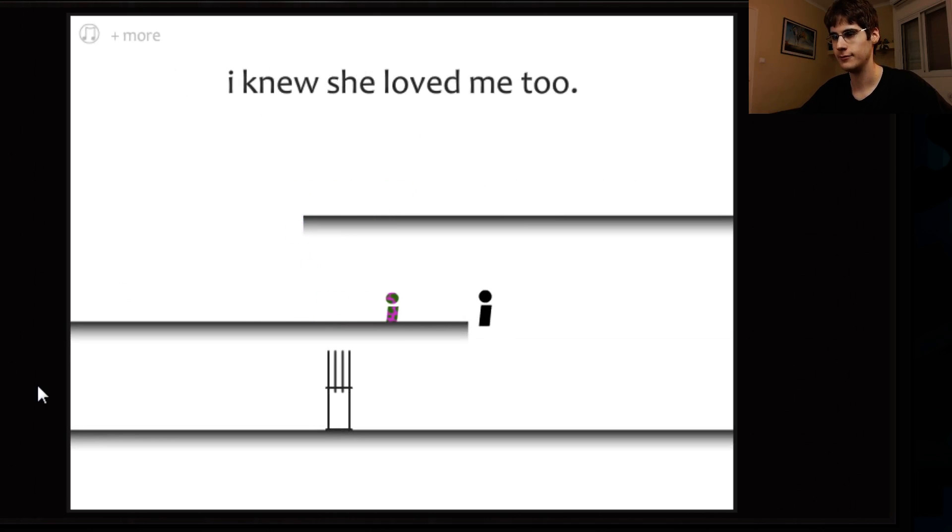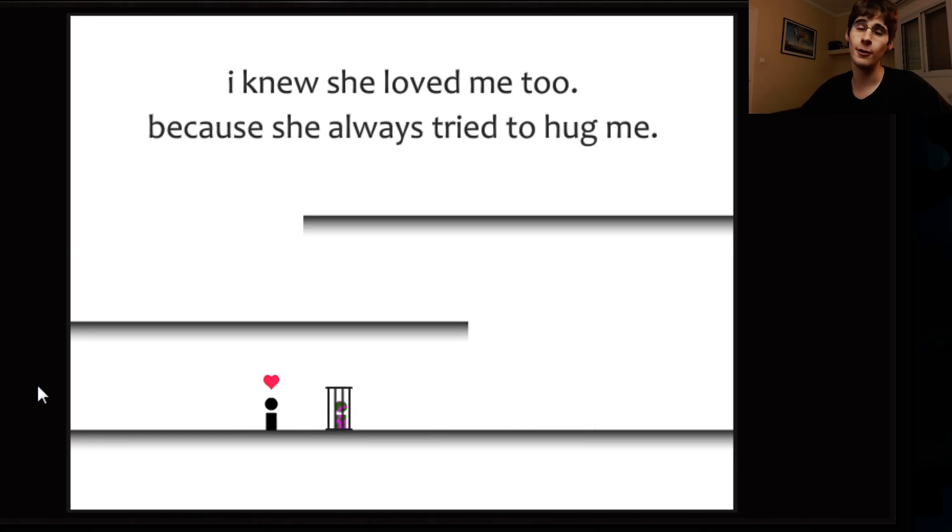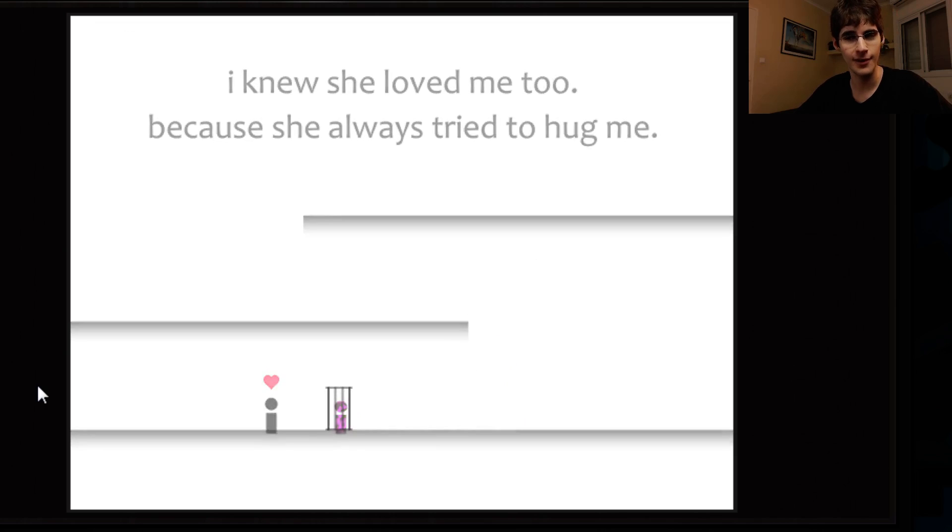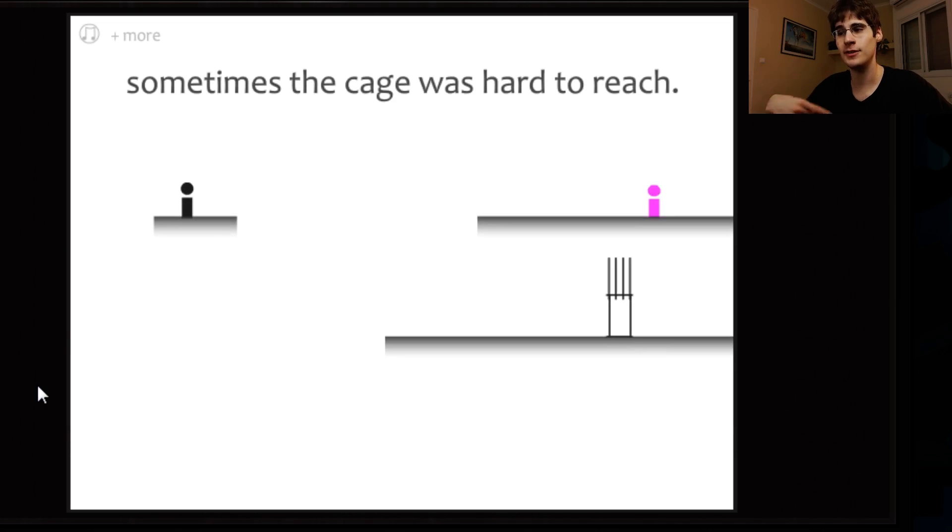And now a little bit of platforming. I knew she loved me too. Because she always tried to hug me. And here we get to, we start seeing the narrative. We start seeing how the story is conveyed and what every level actually tells us. Sometimes it's something about the gameplay itself. Sometimes it's just a cutesy little thing about the story and the relationship. But it works really well.